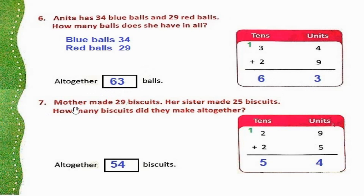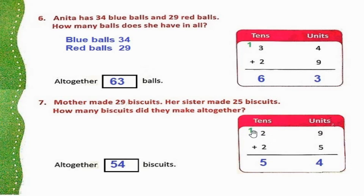Question 7: Mother made 29 biscuits. Her sister made 25 biscuits. How many biscuits did they make altogether? So 29 plus 25: 9 plus 5 is 14 — 4 in the unit place and 1 carry forward. 1 plus 2 is 3, 3 plus 2 is 5. So 54. Altogether 54 biscuits.